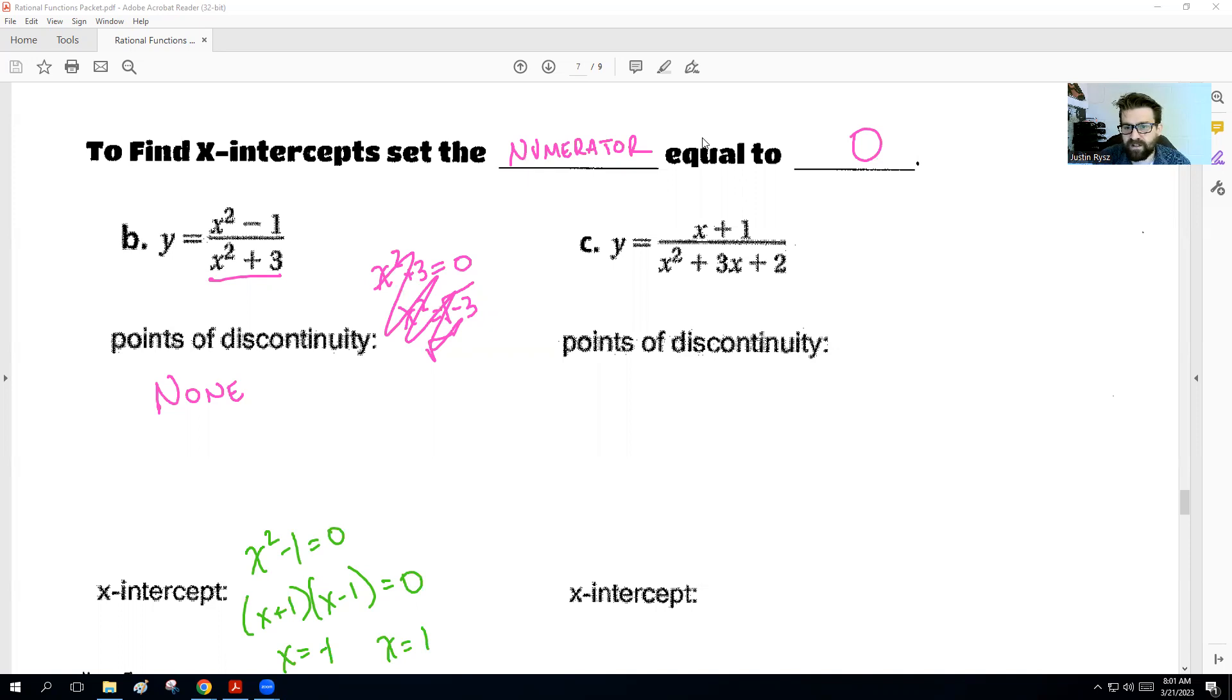Now, on this other one here, let's see. The points of discontinuity. Let's take our x squared plus 3x plus 2, set that equal to 0. We're going to set the denominator equal to 0. When we set the denominator equal to 0, we need to make sure we factor this. And we would get an x plus 1 and an x plus 2. What two numbers multiply together to give us 2, add together to get 3. And so we would have a discontinuous point at negative 1 and a discontinuous point at negative 2.